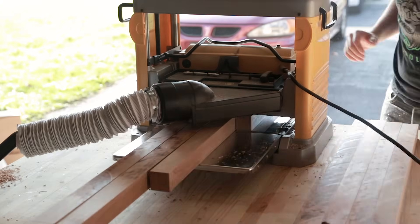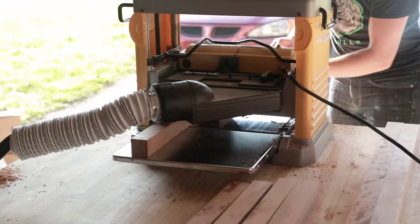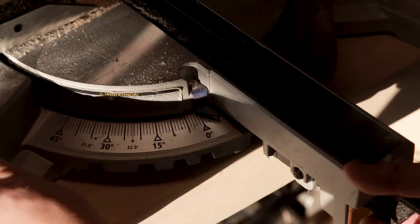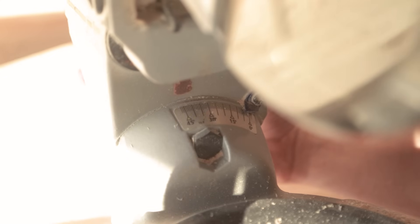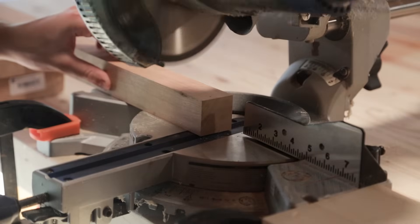I used the planer to clean up the saw marks and bring them to their final thickness. To angle the legs in and towards the center I made a compound miter cut, turning my blade 7 degrees and tilting the blade 7 degrees.